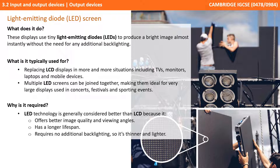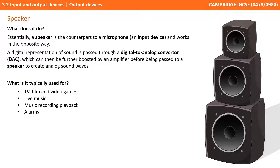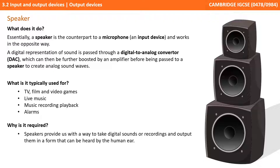The next output device we look at are speakers. A speaker is essentially the counterpart to a microphone and works in the opposite way. A digital representation of a sound is passed through a digital to analog converter, a DAC, which can be further boosted by an amplifier before being passed to a speaker to create analog sound waves. Speakers are used in a wide variety of situations: TV, films, video games, live music, music recording playback, alarm systems and more. Speakers provide us with a way to take digital sounds or recordings and output them in a form that can be heard by the human ear.